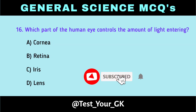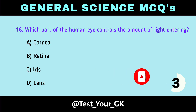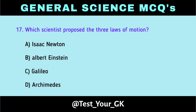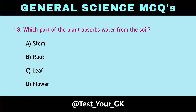Which part of the human eye controls the amount of light entering? Which scientist proposed the 3 laws of motion? Which part of the plant absorbs water from the soil? Answer: Root.